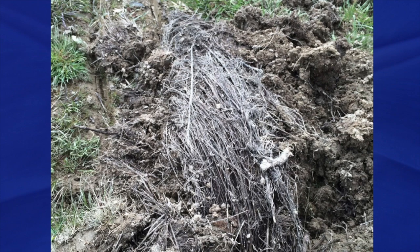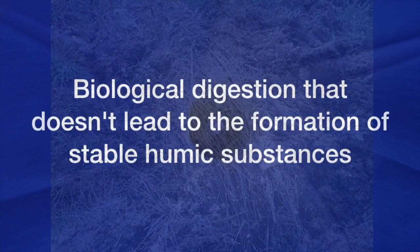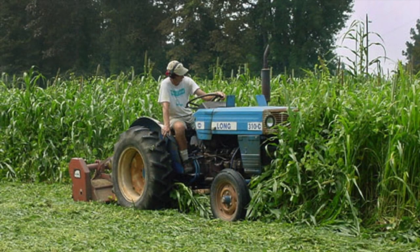The second reason that organic crop residues are not properly converted to organic matter is because we have an improper biological digestive process — biological digestion that doesn't lead to the formation of stable humic substances. When we look at this cover crop of sorghum sudangrass approaching six feet tall, how much of this cover crop do you think will build stable soil organic matter? The answer is none. Not one percent of this total biomass will be converted to stable humic substances that will remain in the soil for an extended period of time.